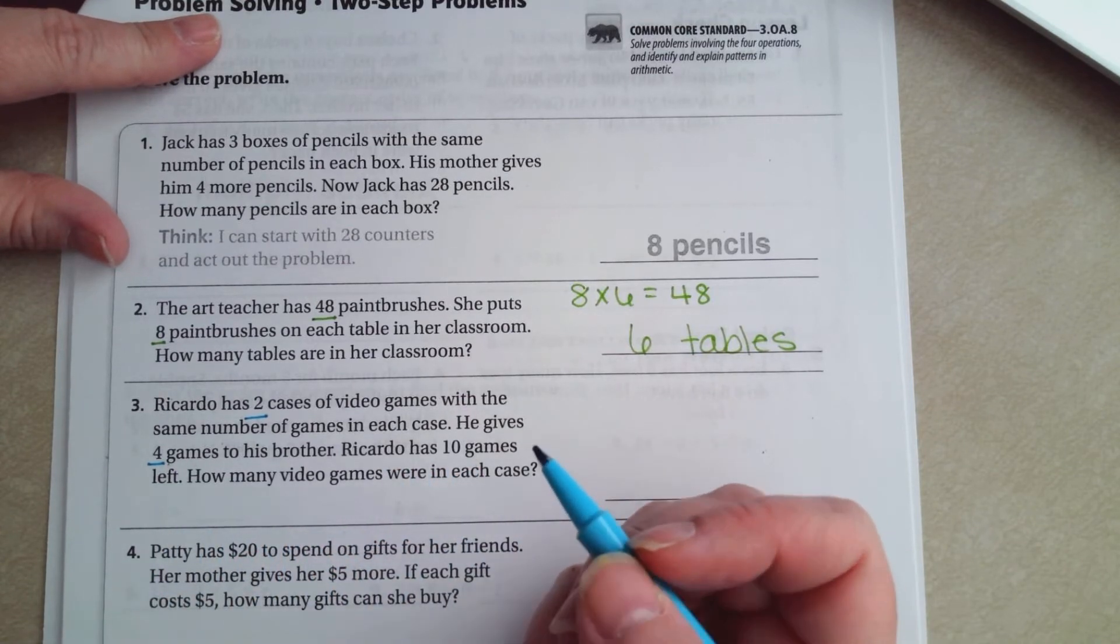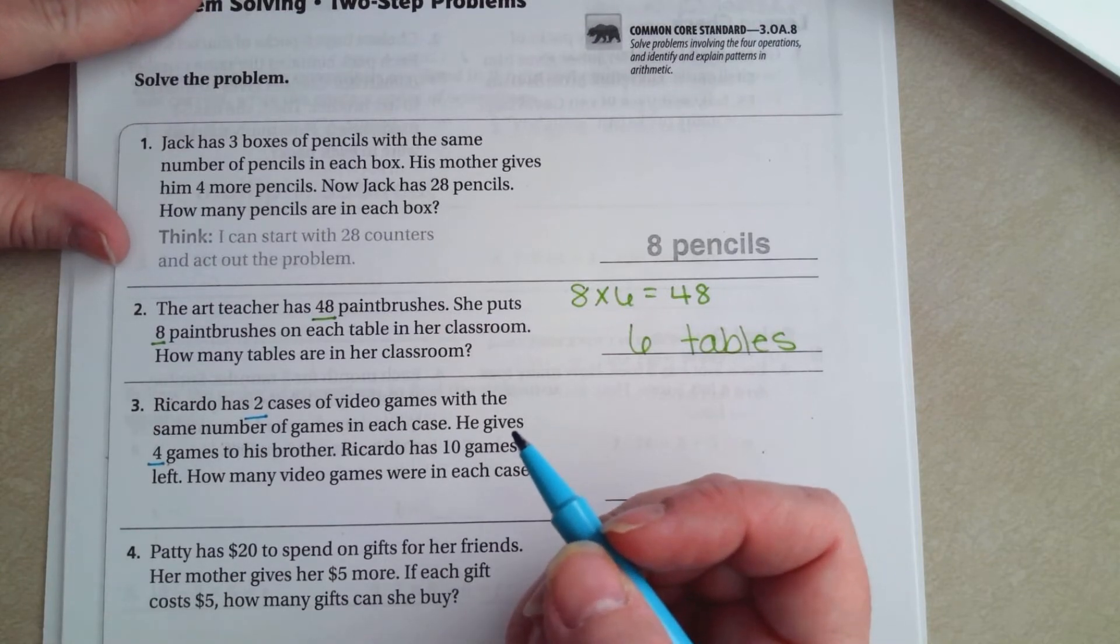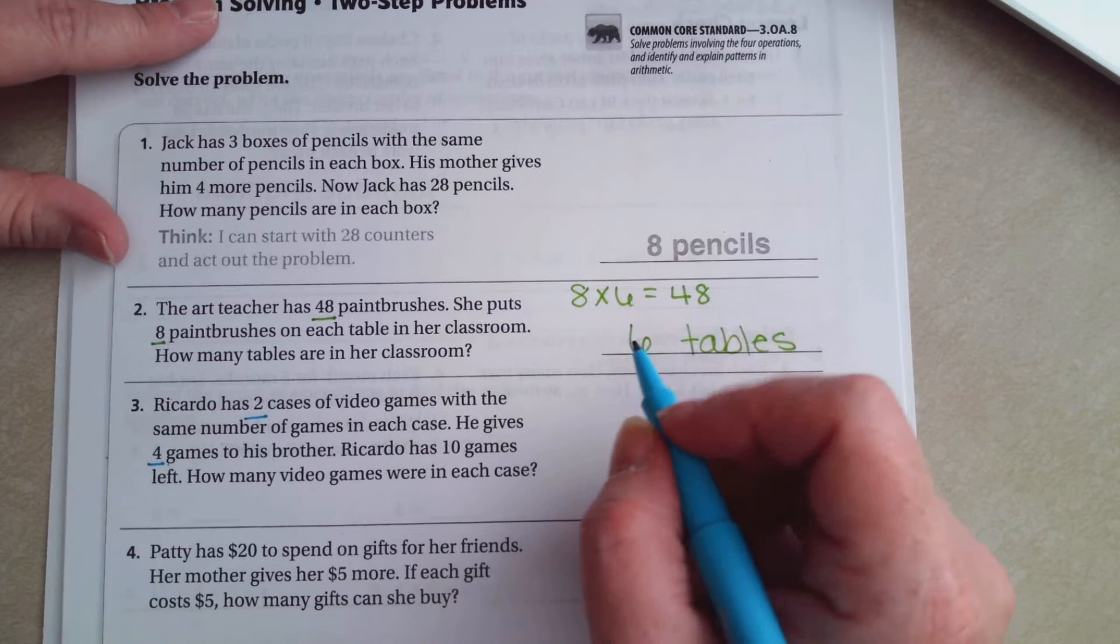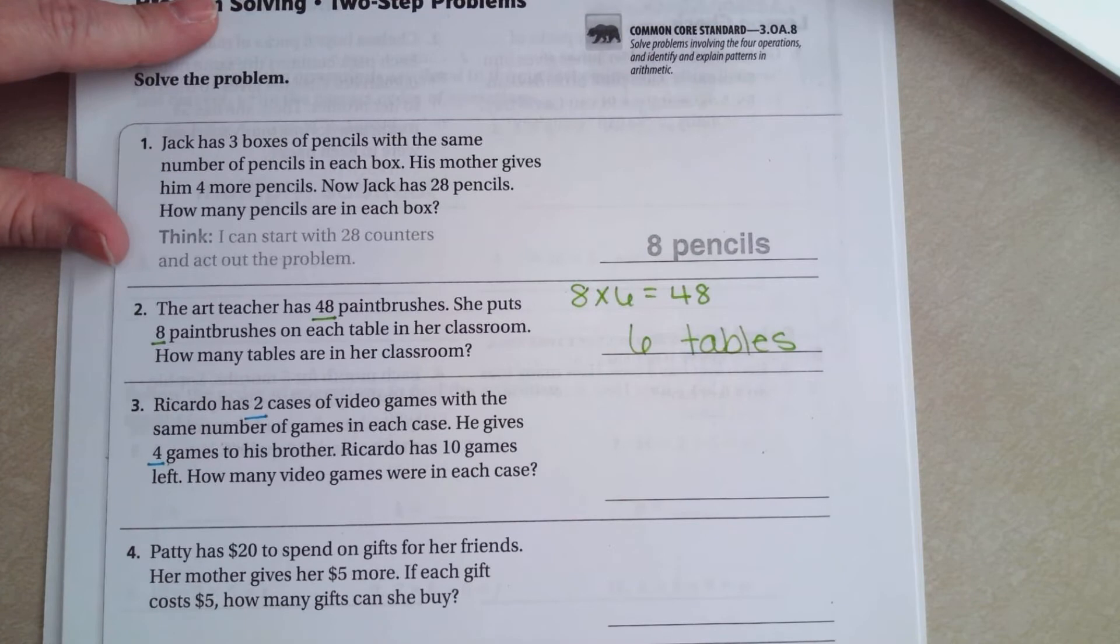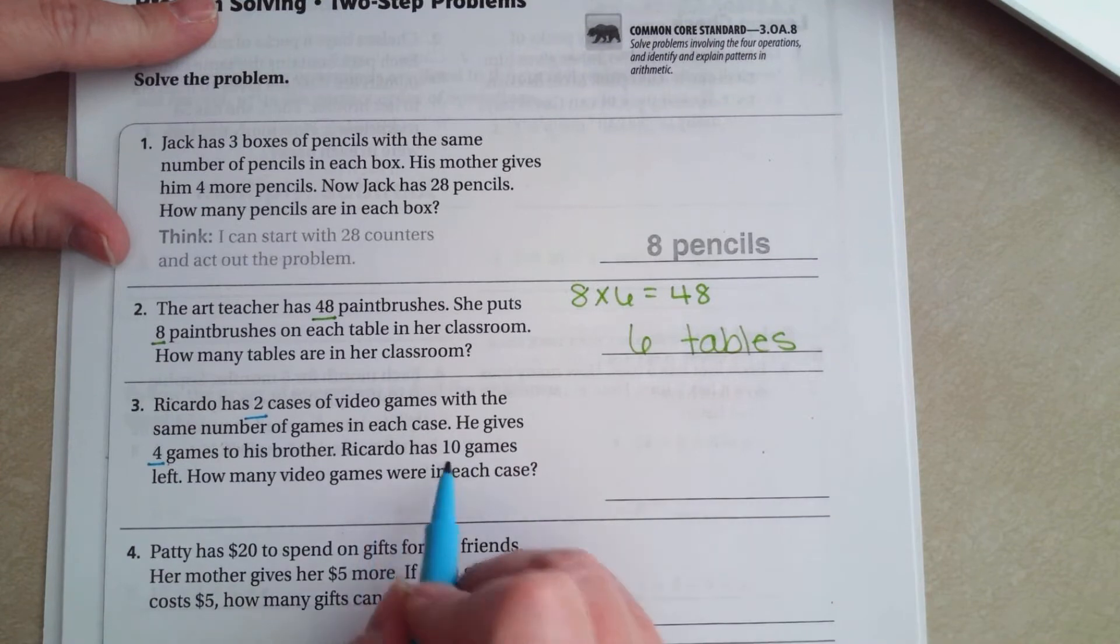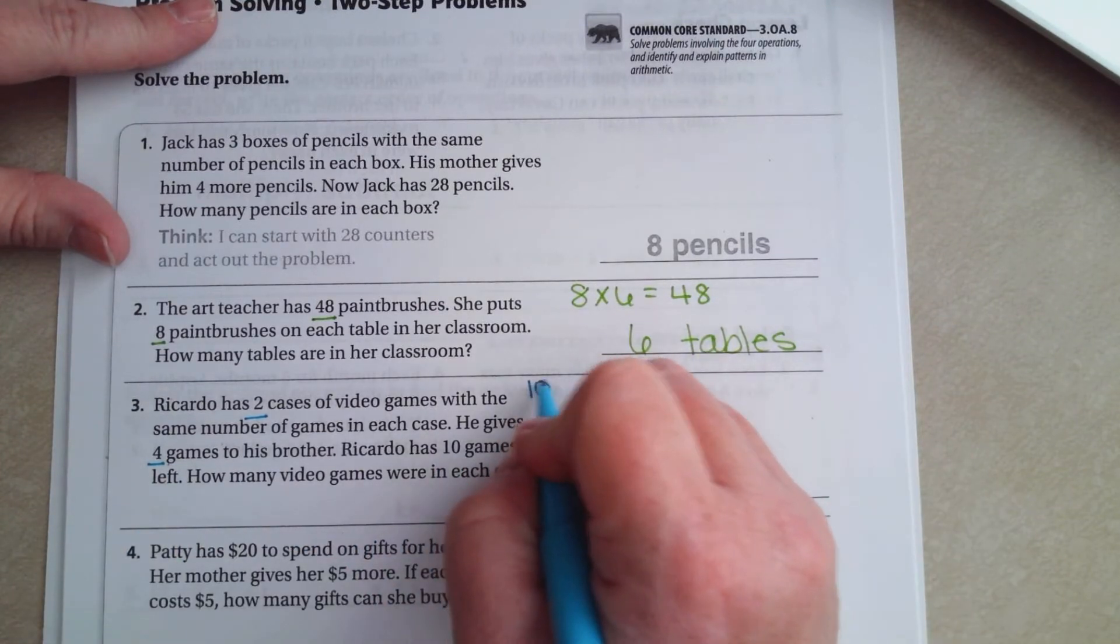So he has two cases of video games. He gave four away and has 10 games left. So we had 14 video games, right? If he has 10 left and gave four away, then that 10 plus the 4 is 14.